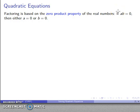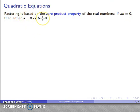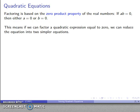The zero product property comes down to the following: if I have a product equal to zero, then one of the two factors must be equal to zero. So if a times b equals zero, either a equals zero or b equals zero. This means that if I can factor a quadratic expression equal to zero — a quadratic equation — I can reduce it into two simpler equations: one factor is zero, the other factor is zero.